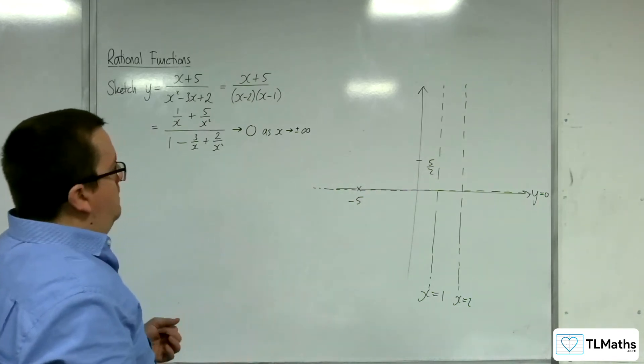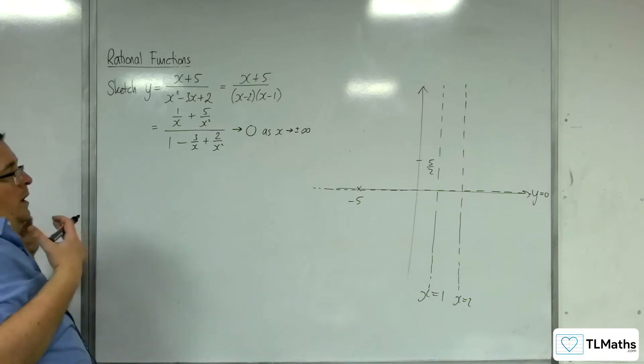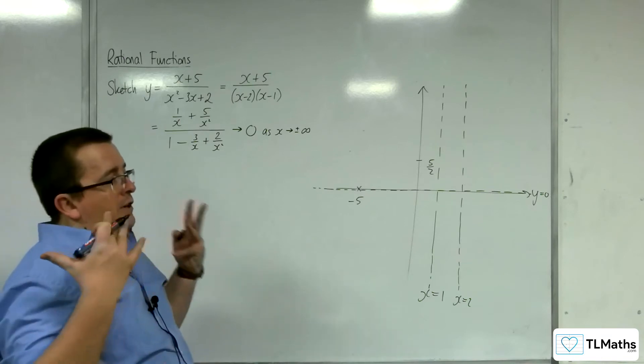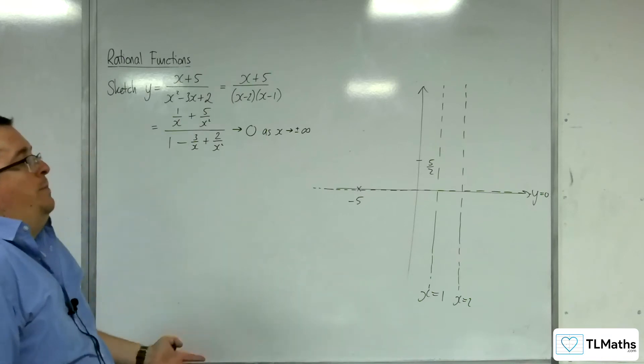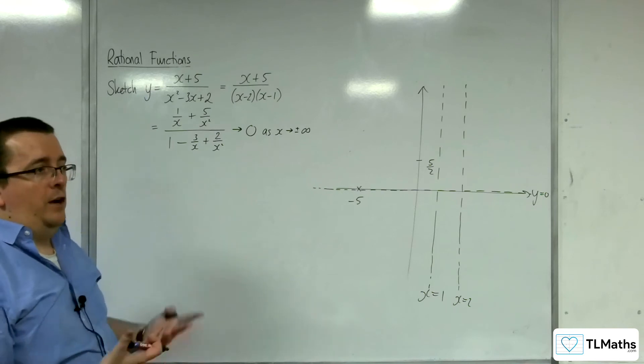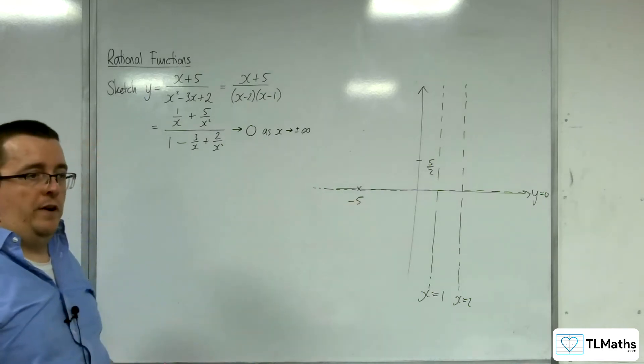Right, okay, so I don't need to check to see whether the curve is going to cross the horizontal asymptote again, because that would be where it's crossing the x-axis, and I know there's only one point where it crosses the x-axis, at minus 5.